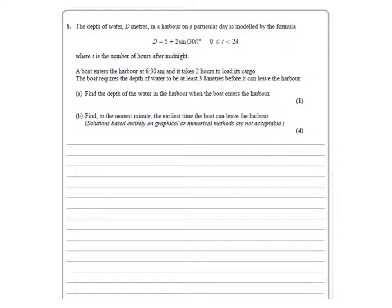The depth of water d metres in a harbour on a particular day is modelled by the formula d equals 5 plus 2 sin 30t, where t is the number of hours after midnight.